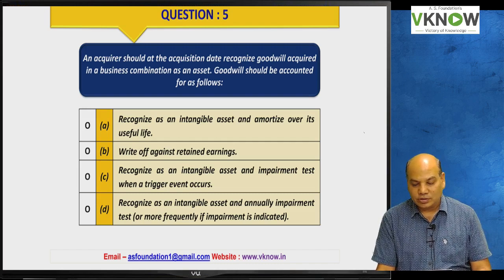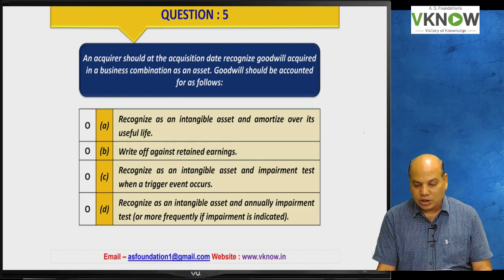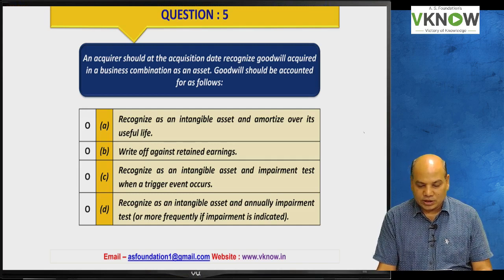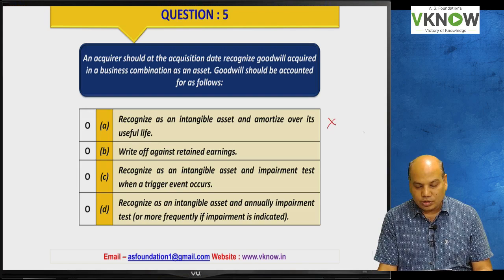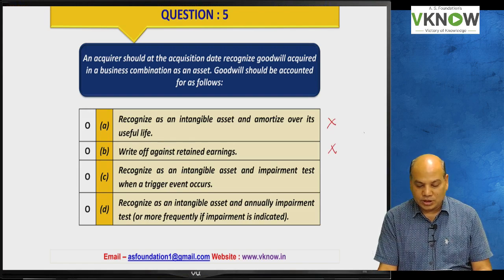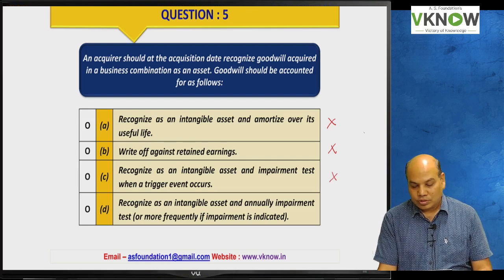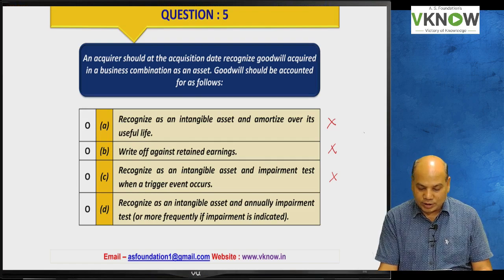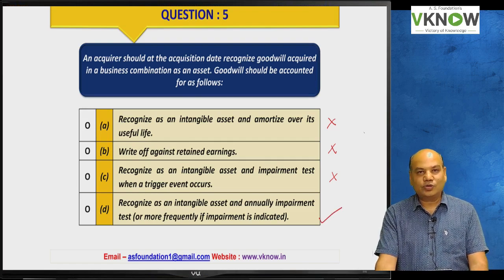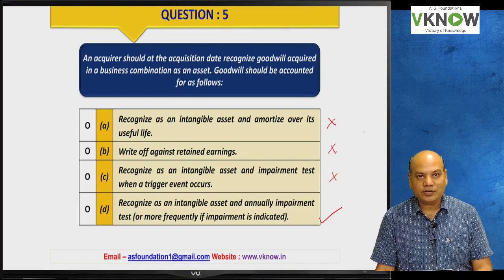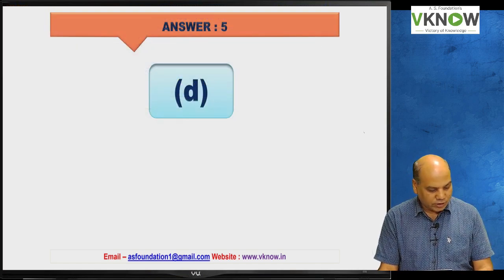Question number five: An acquirer should, at the acquisition date, recognize goodwill acquired in a business combination as an asset. Option A says recognize as an intangible asset and amortize over its useful life — but we do not amortize goodwill. Option B says write off against retained earnings — no. Option C says recognize as intangible asset and test for impairment when a trigger event occurs — no, goodwill must be tested annually or more frequently if impairment is indicated. The correct answer is D.